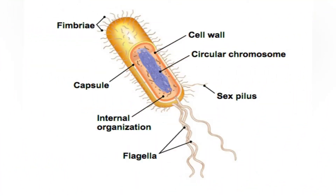Fimbria is a term used for a short pilus that is used to attach the bacterium to a surface, sometimes also called an attachment pilus. The term fimbria can refer to many different types of pilus, as many different types of pilia have been used for adhesion, a case of convergent evolution. The gene ontology system does not treat fimbria as a distinct type of appendage, using the generic pilus type instead.